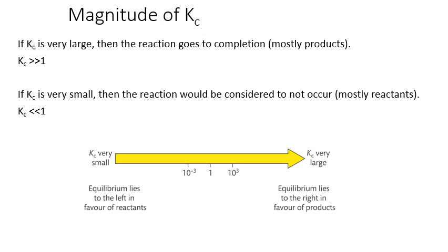For an equilibrium reaction of the form: a moles of A plus b moles of B giving c moles of C and d moles of D, the Kc equilibrium constant expression is: [C]^c × [D]^d divided by [A]^a × [B]^b, where square brackets denote equilibrium concentration in mol dm⁻³. If Kc is very large (much greater than 1), the reaction goes essentially to completion — 100% products. If Kc is very small (much less than 1), the reaction is considered to not occur, as mostly reactants are present. If Kc is around 10⁻⁶, equilibrium lies to the left favouring reactants; if very large, equilibrium lies to the right favouring products.